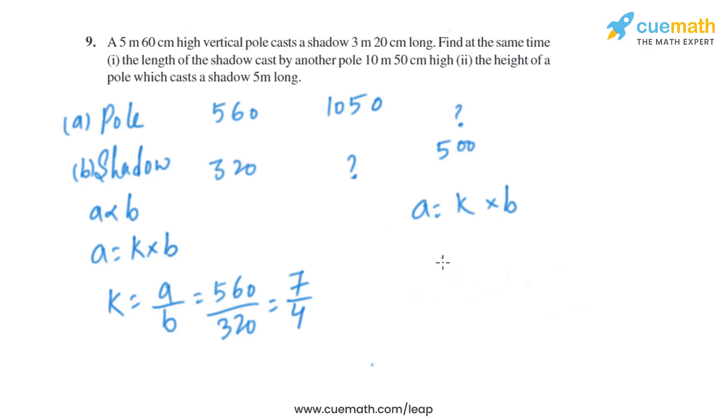Now let's take the another part. We know the value of b is given, and we know k is given. So k is 7 by 4 multiplied by 500, and on solving this we will get 875 centimeter.